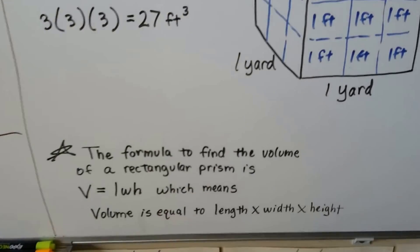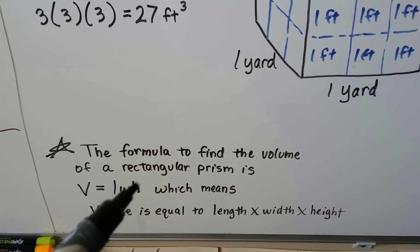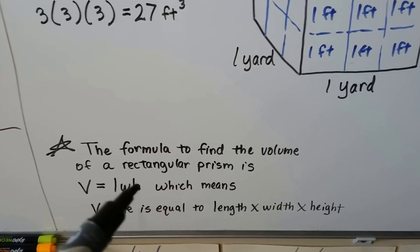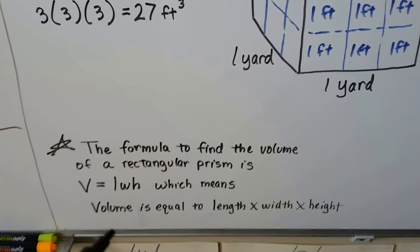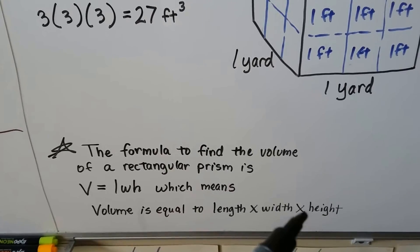And the formula to find the volume of a rectangular prism is V equals LWH. When all the letters are right next to each other, that means we multiply them. Volume is equal to length times width times height.